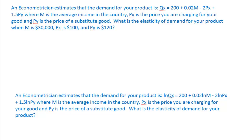Py is the price of a substitute. So income is $30,000, you've charged $100, and your substitute competitor is charging $120. They're not perfect substitutes, but they're similar.